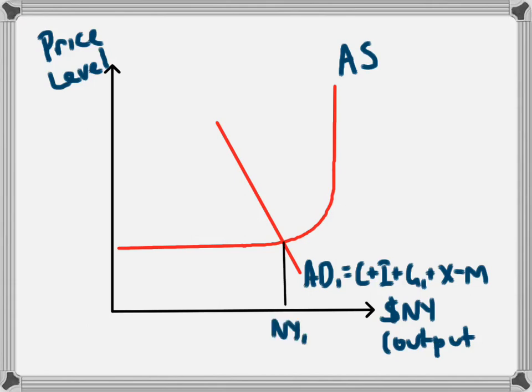That level of aggregate demand corresponds to the NY1 level of national income or output, which we could think of as gross domestic product. An increase in government spending will lead to an increase in aggregate demand.